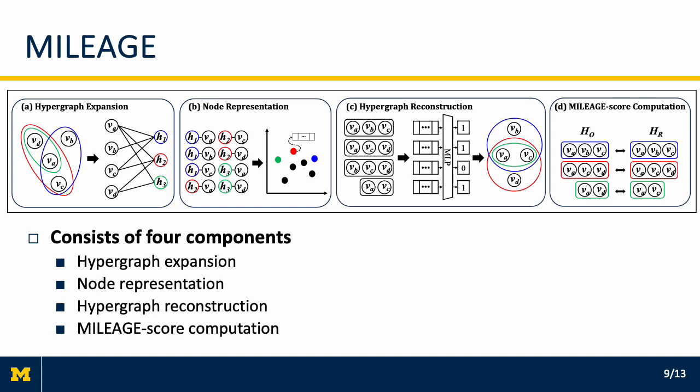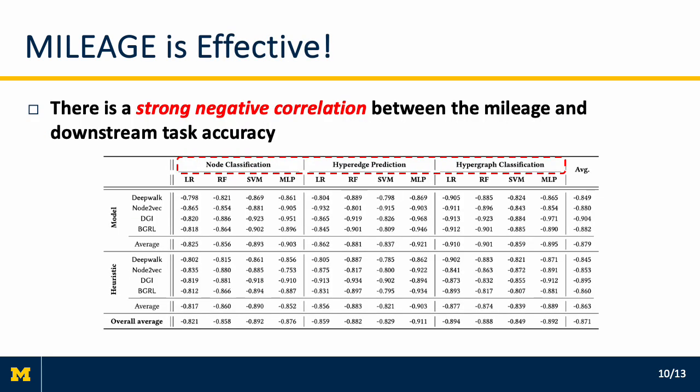We propose the MILEAGE framework that evaluates hypergraph expansion methods by quantifying the degree of information loss. MILEAGE consists of four components: hypergraph expansion, hypergraph representation, and hypergraph reconstruction. Through extensive experiments using eight real-world hypergraph datasets and three downstream tasks, we observe a strong negative correlation between the MILEAGE score and downstream task accuracy, regardless of downstream tasks, URL methods, and prediction model.